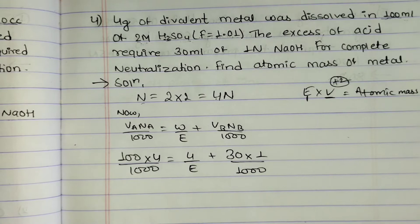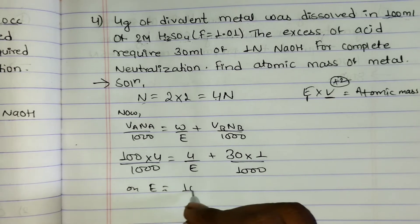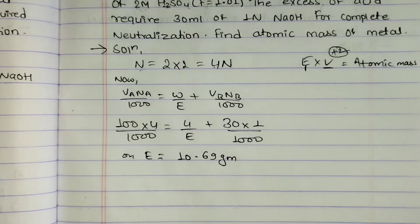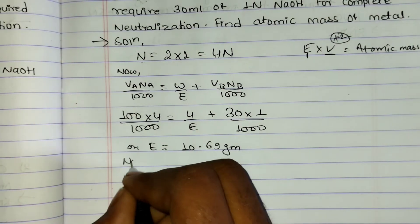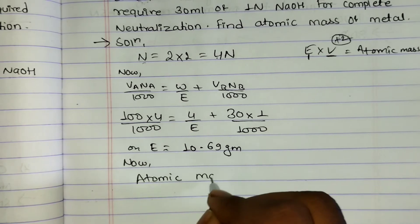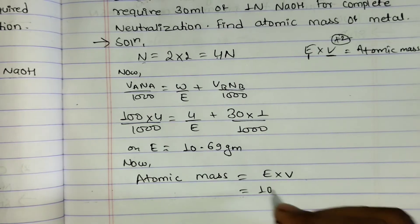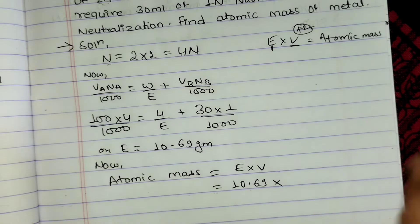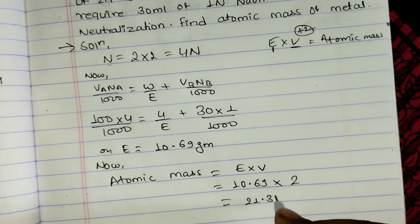Solving further gives W = 10.69 grams. Since atomic mass = equivalent weight × valence, and it is a divalent metal (valence = 2), atomic mass = equivalent weight × 2. Calculating: atomic mass = 10.69 × 2 = 21.38.